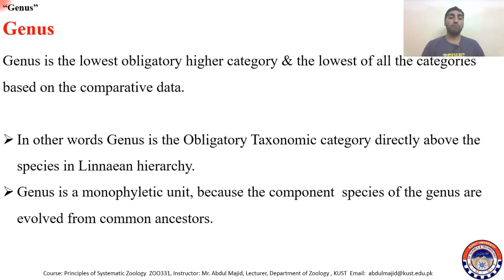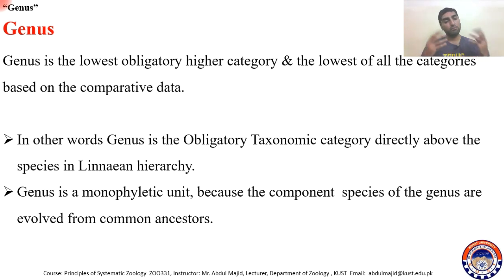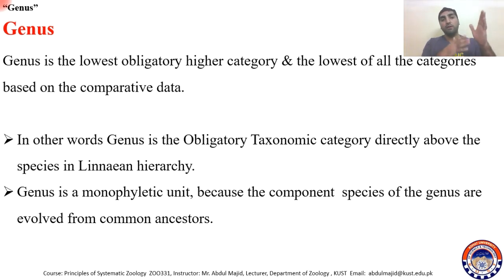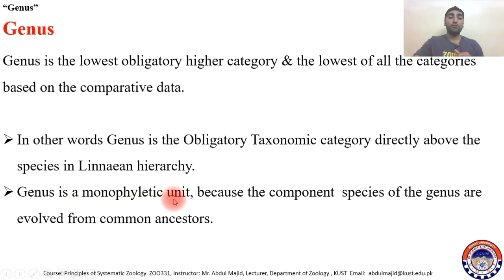Genus is a monophyletic unit — a very important characteristic. All animals in a genus belong to a common ancestor. 'Mono' means single and 'phyletic' relates to phylogeny. All organisms inside a genus, whether two, three, or thousands, belong to the same lineage and are evolved from common ancestors.